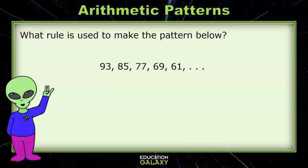Let's try some practice problems. What rule is used to make the pattern below? Well, the pattern is decreasing. To get from 93 to 85, I have to subtract 8. When I continue subtracting 8, I get 77, 69, 61. So the rule works. That means the rule for this pattern is subtract 8.